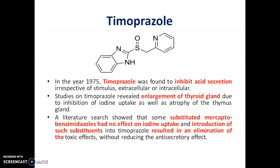The first drug introduced was timoprazole. In 1975, timoprazole was found to inhibit acid secretion irrespective of its stimulus, whether intracellular or extracellular. Studies revealed enlargement of the thyroid gland due to inhibition of iodine uptake, as well as atrophy of the thymus gland. Literature search showed that some substituted mercaptobenzimidazoles had no effect on iodine uptake, and introduction of such substituents into timoprazole resulted in elimination of toxic effects without reducing antisecretory effects.